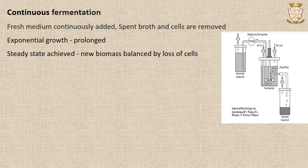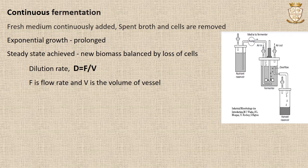In continuous fermentation, exponential growth in a batch culture may be prolonged by the addition of fresh medium to the vessel. Fresh medium is continuously added and an equal volume of spent fermentation medium with growth and cells is displaced. Exponential growth will proceed and a steady state will be achieved. The flow of medium into the vessel is related to the volume of the vessel by dilution rate D, defined as D = F/V, where F is the flow rate and V is the volume of the vessel.